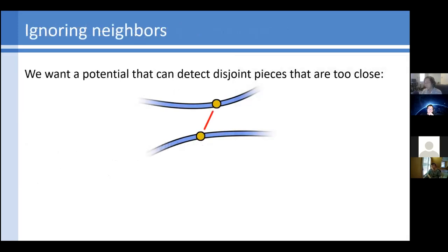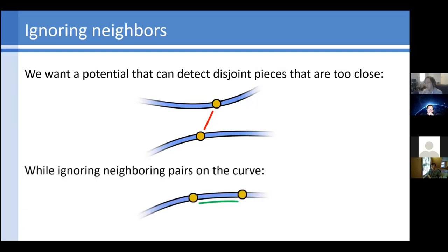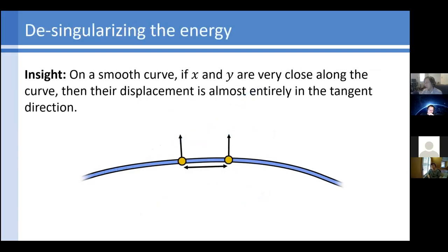We want a potential that can differentiate two cases: one that approaches infinity when disjoint pieces are in danger of colliding, but not when there are just neighboring pairs on the curve that can never move away from each other. We want the potential to ignore its neighbors. What's the difference quantitatively? On a smooth curve, if X and Y are close along the curve — if they're actually intrinsic neighbors — their displacement is going to be almost entirely tangent to the curve. There's no separation in the perpendicular direction. So whatever potential we use, it's going to want to involve tangents or normals.